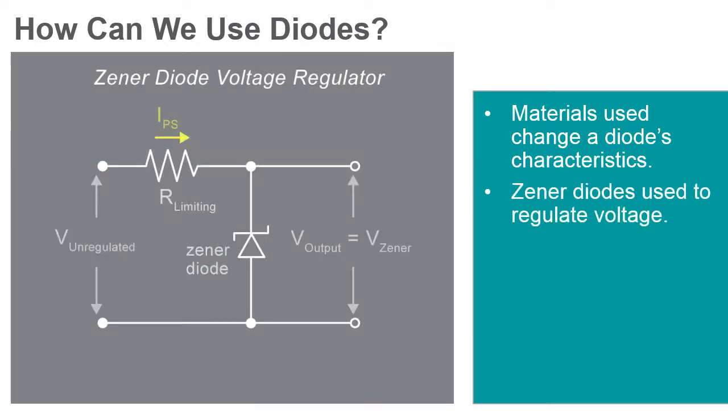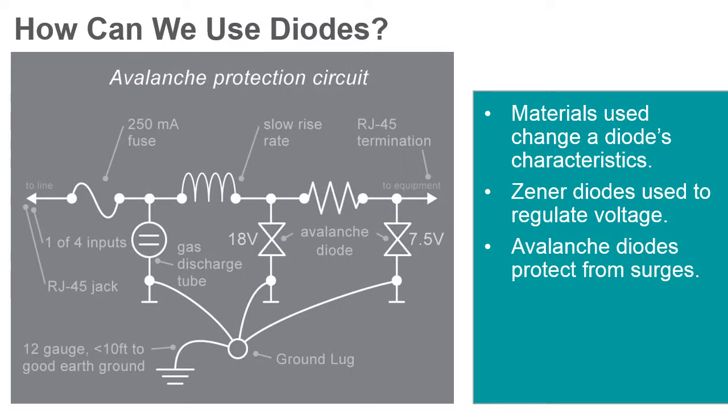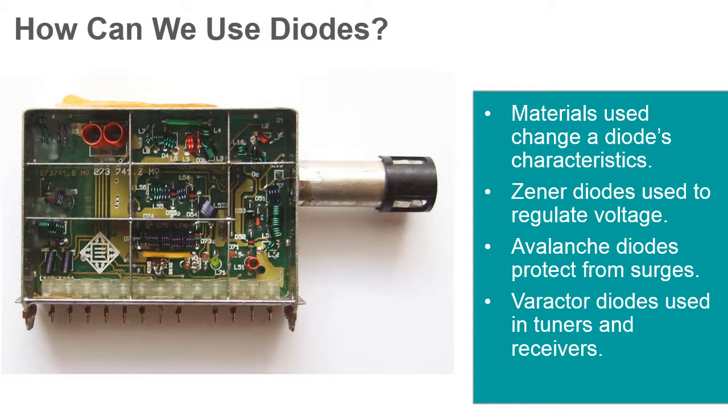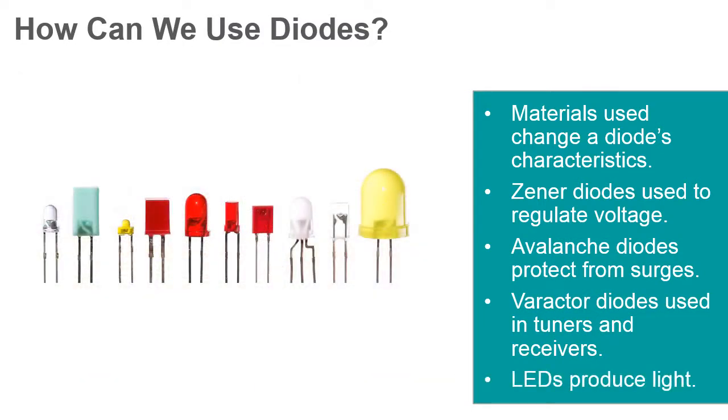For example, Zener diodes are used to regulate voltage. Avalanche diodes protect circuits from high voltage surges. Varactor diodes are used to electronically tune radio and television receivers. And light-emitting diodes, or LEDs, produce visible light. Any typical electronic device will contain many different kinds of diodes.